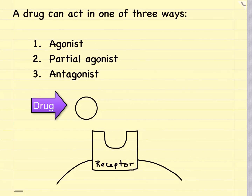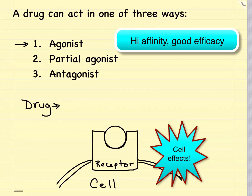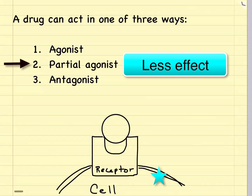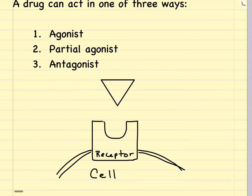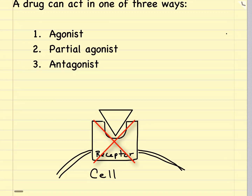Now let's look at how a drug can act on a receptor — in one of three ways: as an agonist, a partial agonist, or an antagonist. A drug agonist has a high level of affinity and a high level of efficacy, causing a specific observable effect on the cell. A partial agonist has less affinity for the receptor and poor efficacy, so it won't have as many cellular effects. A drug antagonist interacts with the receptor but has no activity against the cell, and it can inhibit the action of an agonist by blocking that receptor entirely.